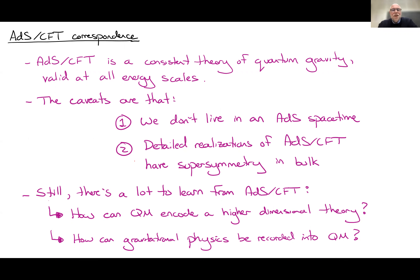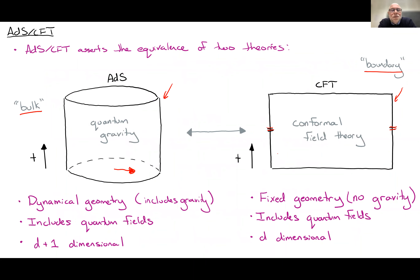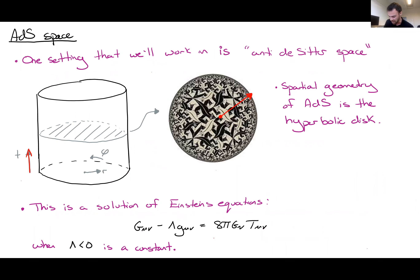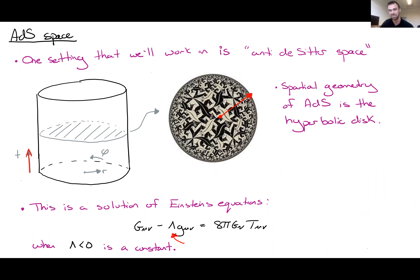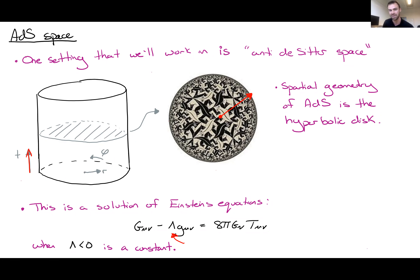Question from audience: Why don't we live in AdS spacetime? AdS space is a solution to Einstein's equations where the cosmological constant is negative. That number in our universe seems to be positive — if you're familiar with the measurements showing that the expansion of the universe is accelerating, this is an indication that the cosmological constant has the wrong sign. The short answer is: the cosmologists tell me that we don't live in AdS space.